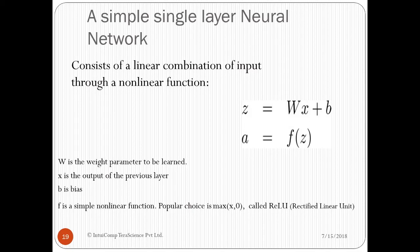A simple single-layer neural network consists of a linear combination of input through a non-linear function. W is the weight parameter to be learned. X is the output of the previous layer or input to the current layer. B is called a bias term, which helps in better learning of the layer. This operation is stored in Z. F is a simple non-linear function. Popular choice is max x comma 0, called ReLU, rectified linear unit, which outputs x if number is greater than 0, or 0 otherwise. The output of layer is stored in A.